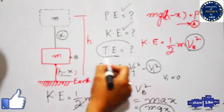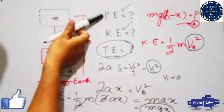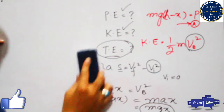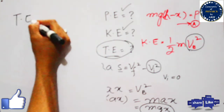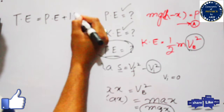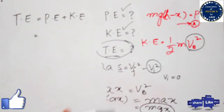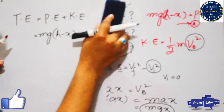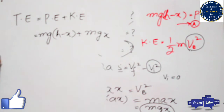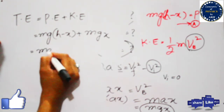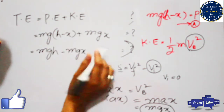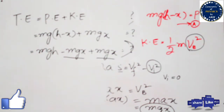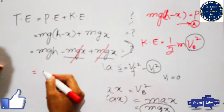Now we calculate the total energy at point B. Total energy equals potential energy plus kinetic energy, which is mg(h minus x) plus mgx. Expanding: total energy equals mgh minus mgx plus mgx. The minus mgx and plus mgx cancel out, so the total energy equals mgh.